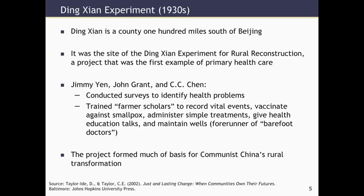The community health worker movement really began back in China, in Dingzhen, a place about a hundred miles from Beijing, where the founder of primary health care, John Grant, working with two Chinese professionals, Jimmy Yen and C.C. Chen, developed a primary health care project that was very innovative — a whole new approach to thinking about how to develop a health program in an area with very limited resources where the population was essentially illiterate.